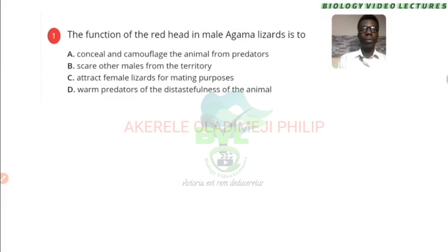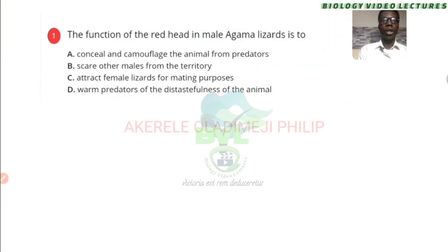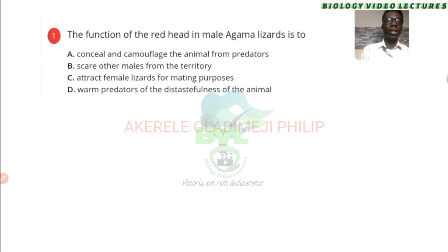It says here that the function of the red head in Agama lizard is to camouflage the animals from predators, scare other males from the territory, and attract females for mating purposes. And that is the answer — C is the answer.